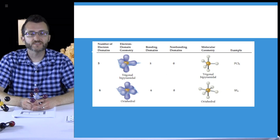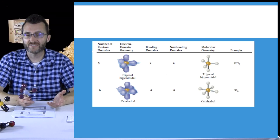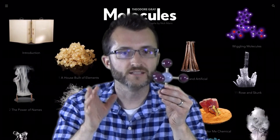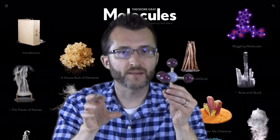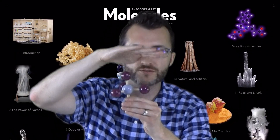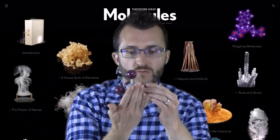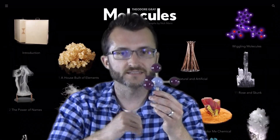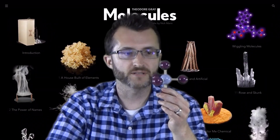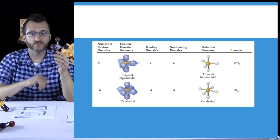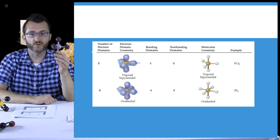Continuing on, we have some examples of shapes with expanded octets. For example, PCl5 is called a trigonal bipyramidal shape. Trigonal means three-sided; bipyramidal means two pyramids — so two three-sided pyramids. You can count: one, two, three on the top pyramid, and one, two, three on the bottom pyramid. We're bonded to five things to make a shape called trigonal bipyramidal. Because we have no unbonded pairs, this is going to be a non-polar molecule. Please label this off to the side as a non-polar molecule.